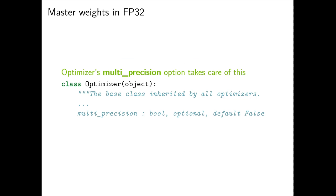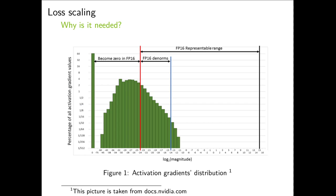The second step is keeping a master copy of weights in FP32. We have this multi precision option in Optimizer class which does exactly that.